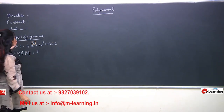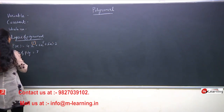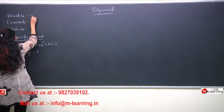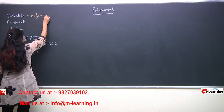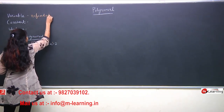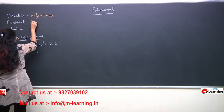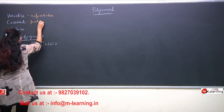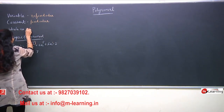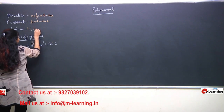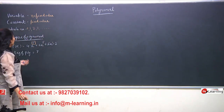I hope you all recall the old lecture. Variable means no fixed value. Constant means those who are having a fixed value throughout the question. Whole numbers are 0, 1, 2, 3, 4, 5, 6, and so on.